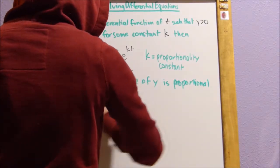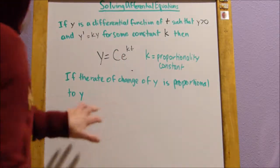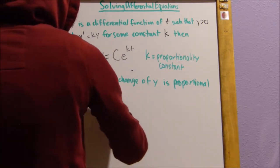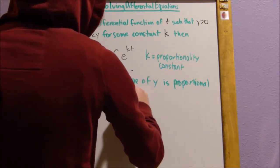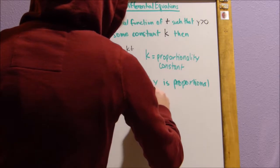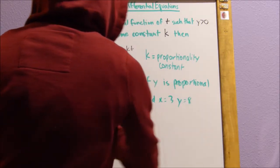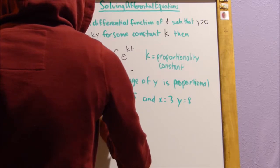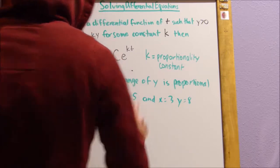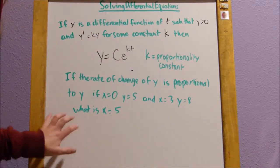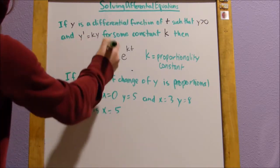And then it'll normally have some points like if x equals 0, y equals 5, and x equals 3, y equals 8, what is x equals 5? It'll have some sort of problem like this, you know to use this formula here.